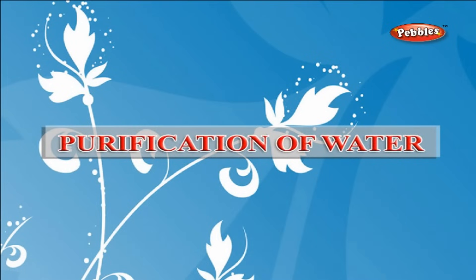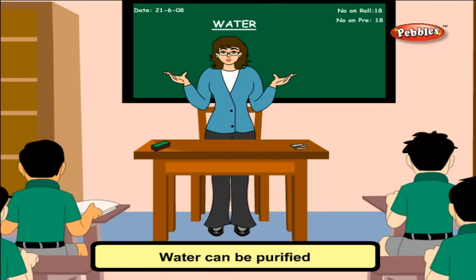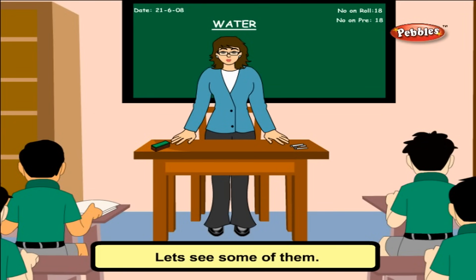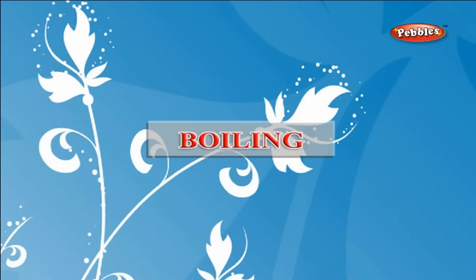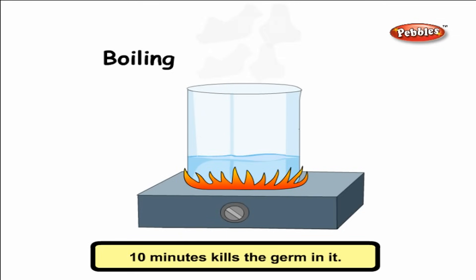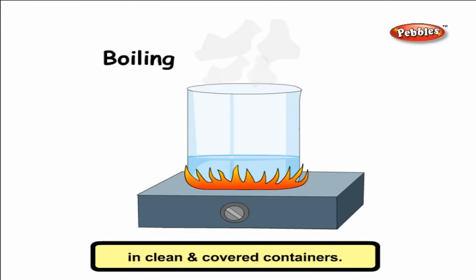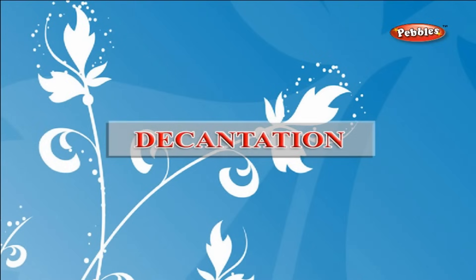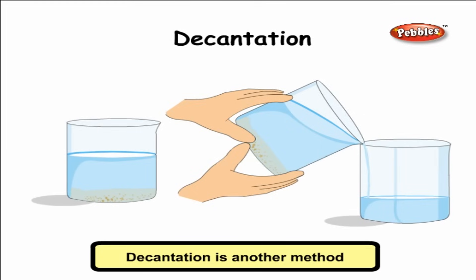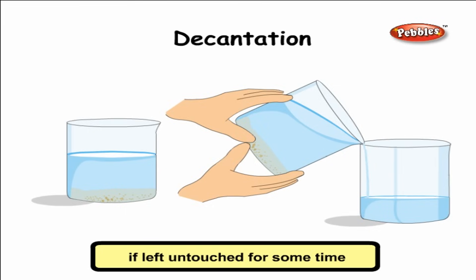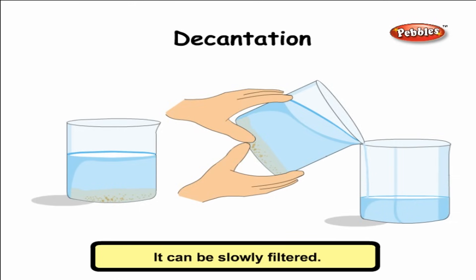Purification of water: Water can be purified by various methods. Boiling: Boiling water for at least 10 minutes kills the germs in it. The boiled water should be stored in clean and covered containers. Decantation: The mud-mixed water in a container, if left untouched for some time, slowly settles down and we get clean water on the upper portion, which can then be slowly filtered. Decanted water still has a lot of impurities.